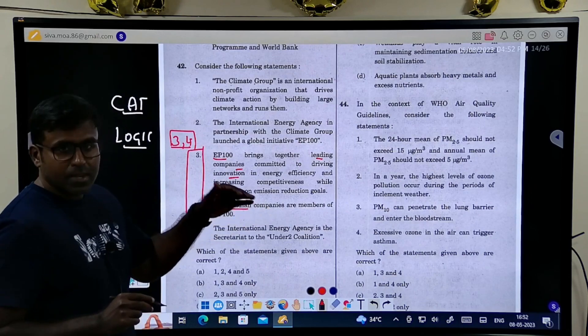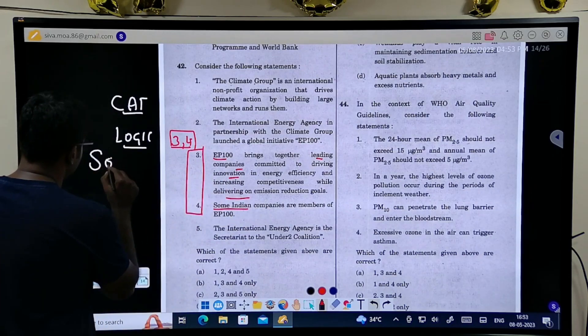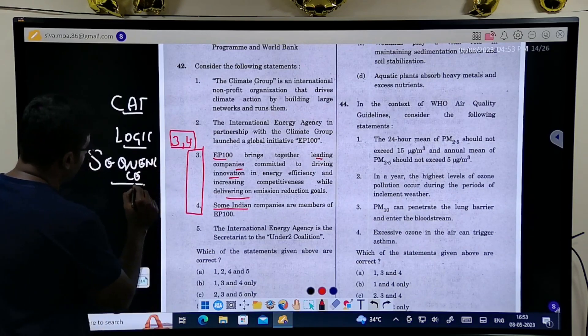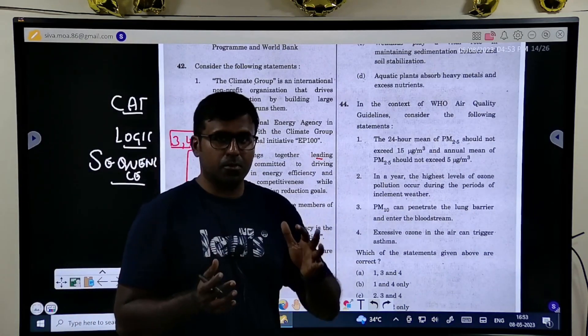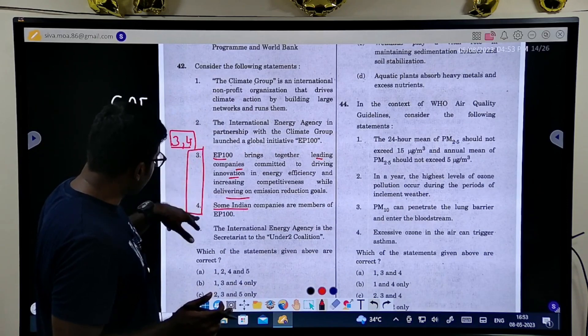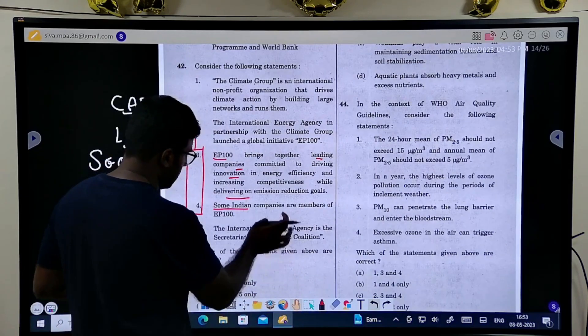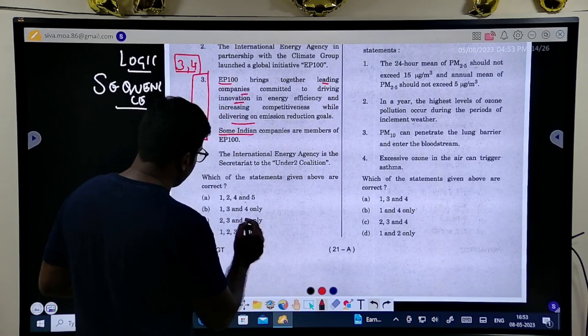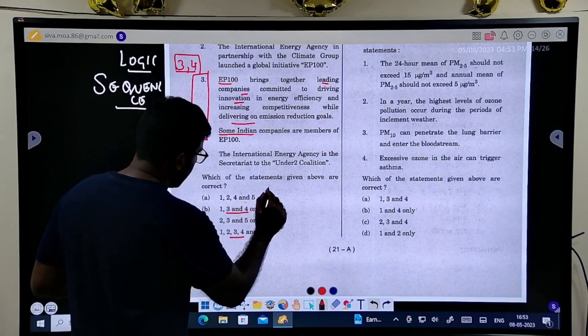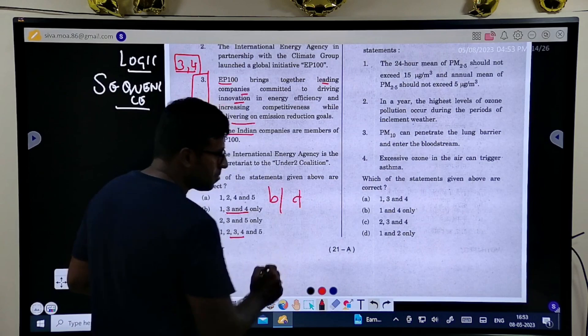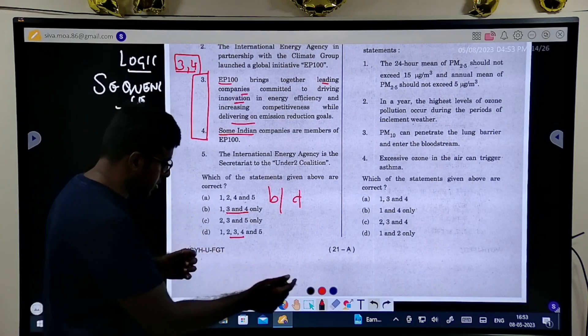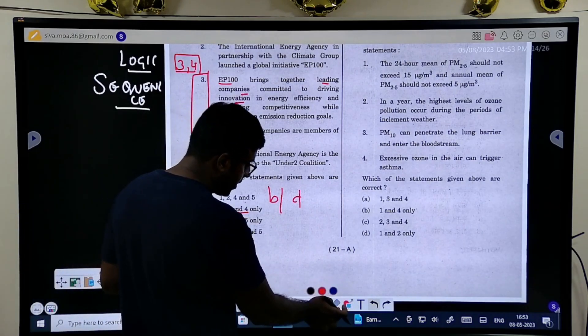If you see this statement, these two statements: EP100 brings together leading companies committed to innovation and delivering emission reduction. Some of the Indian companies are members of EP100. These two statements will always go together. This is the consequence. This logic I applied while studying for CAT exam, that is MBA exam. This logic would be there - sequential arrangement.